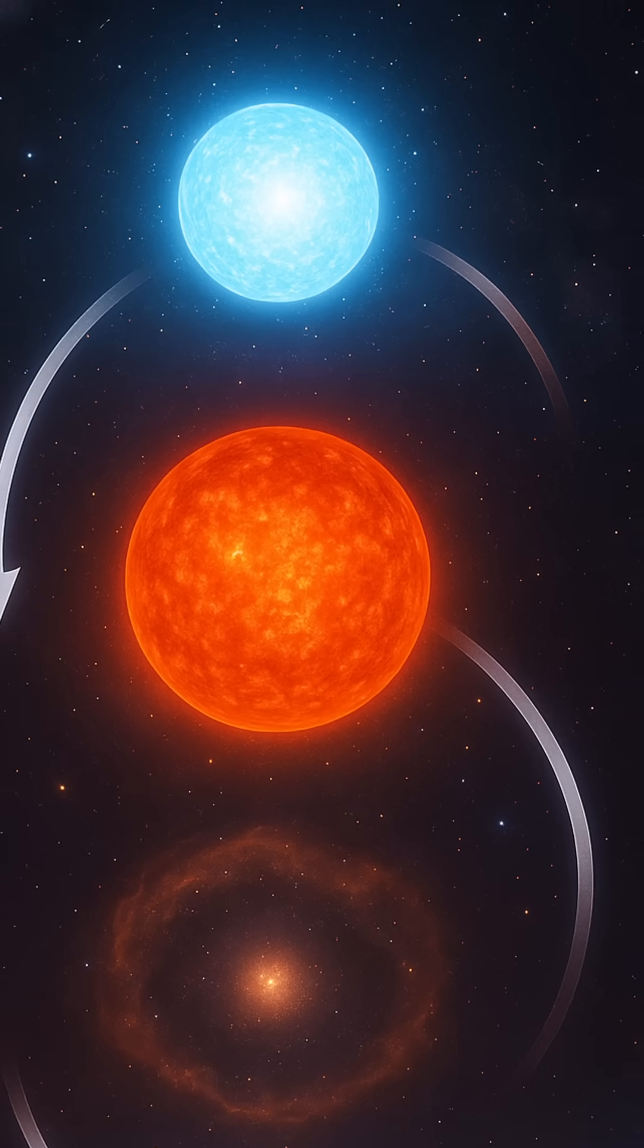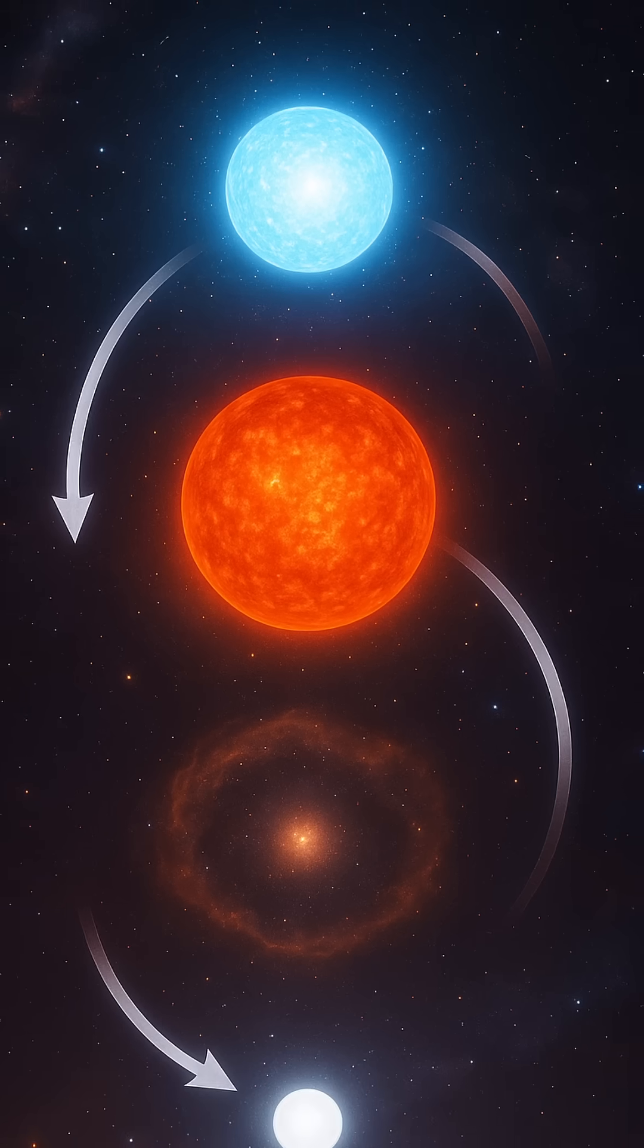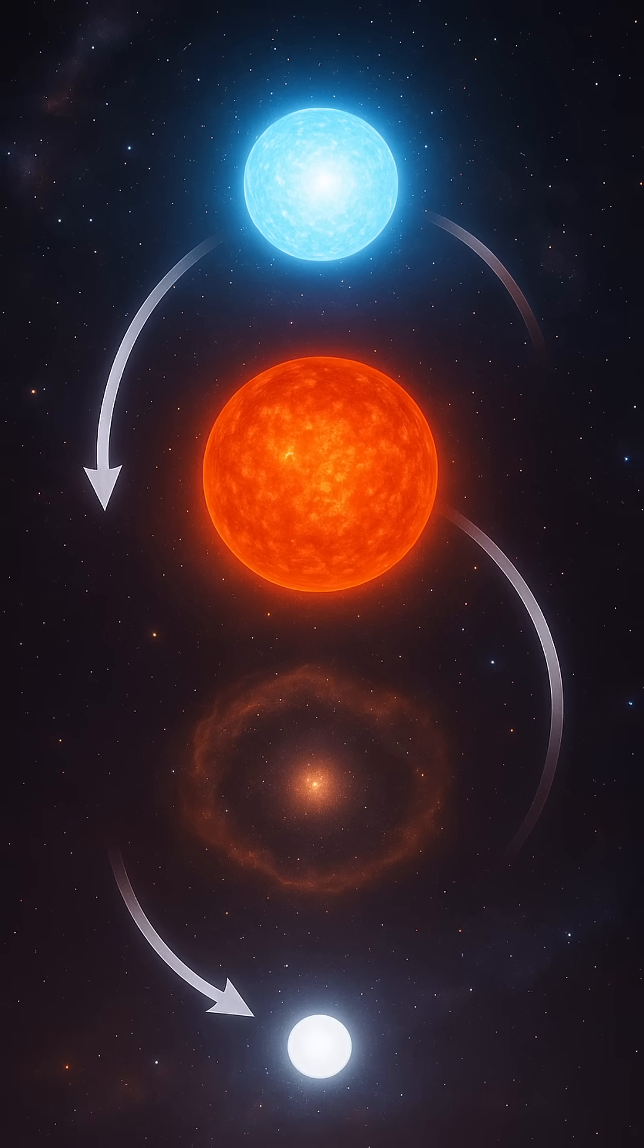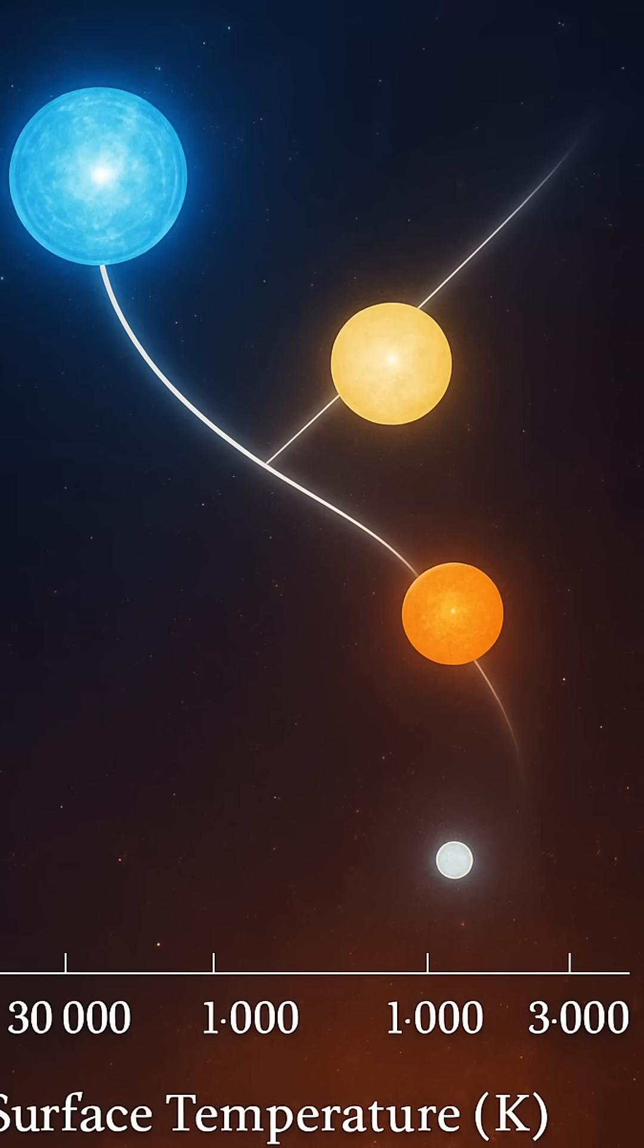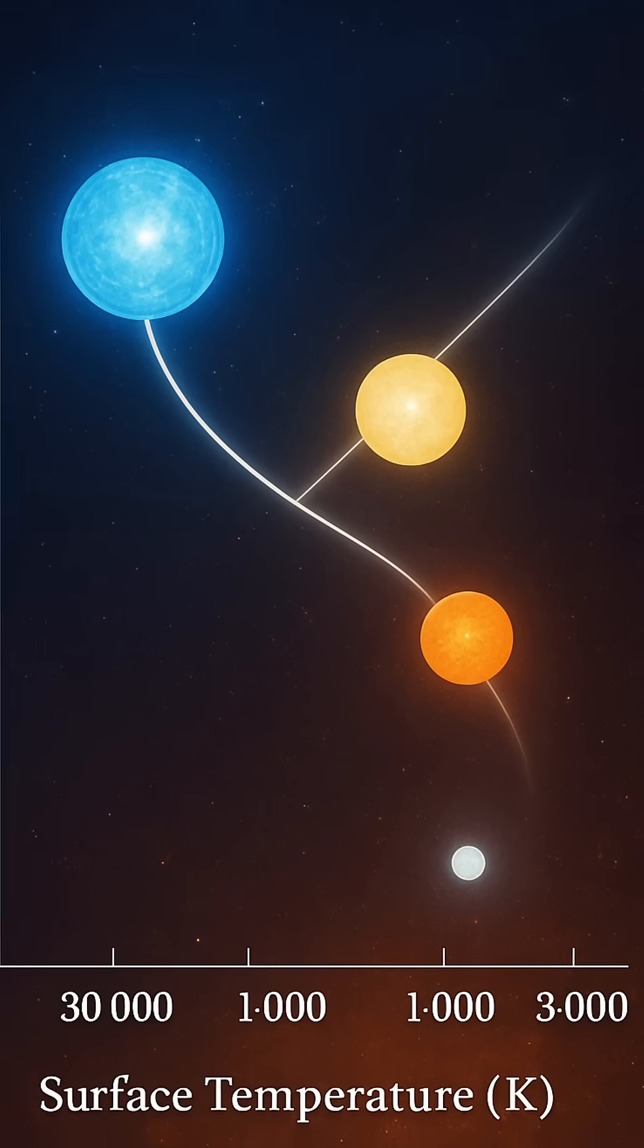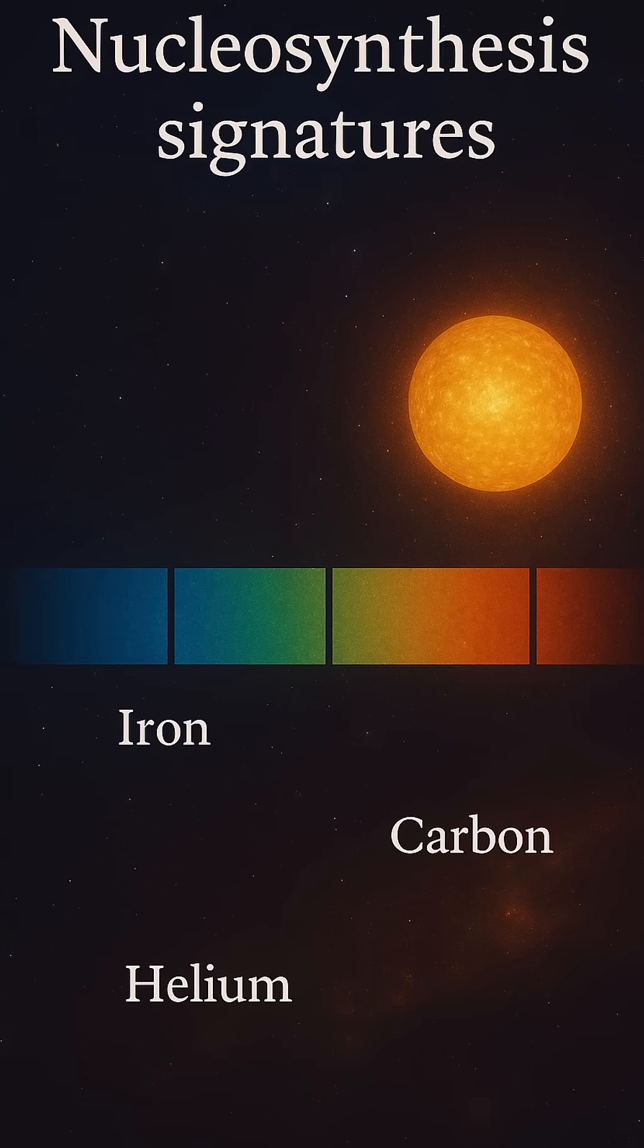How do we peer into the distant past and determine the age of a star that burns millions of light years away? It begins with understanding that stars, like living creatures, have life cycles. These cycles, governed by mass and chemical composition, allow scientists to build detailed stellar models that predict how a star evolves over time.